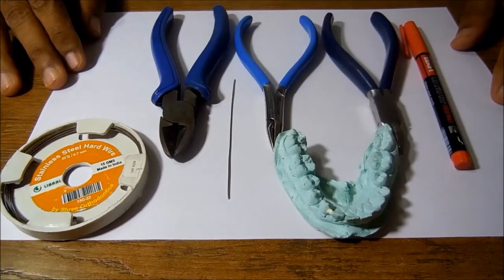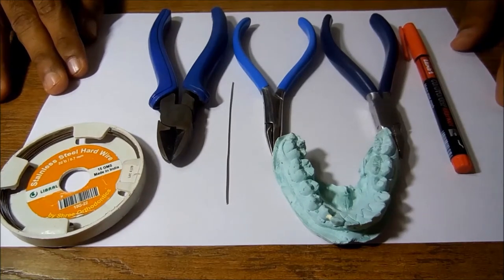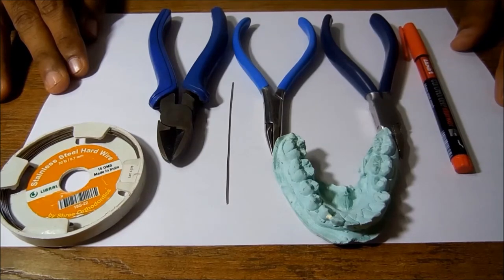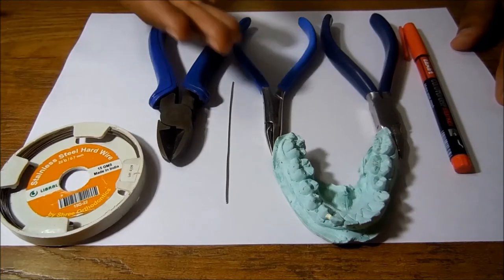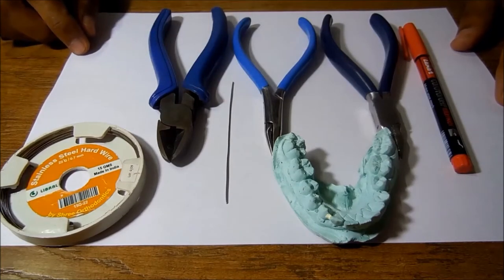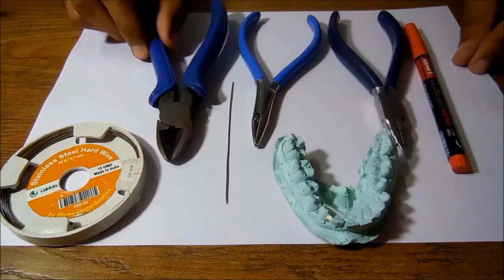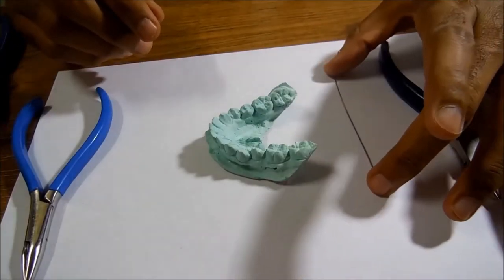Good morning friends, today I'll be demonstrating how to make an Adams clasp. It's also called a universal clasp since it can be made on any tooth. Explaining the armamentarium, what we require is a fairly straightened pliers, a 0.7mm stainless steel wire, a universal plier, half round plier, a heavy wire cutter, and a marker.